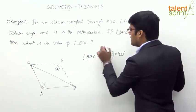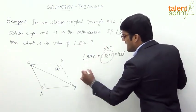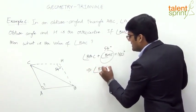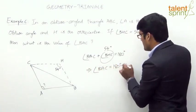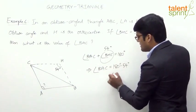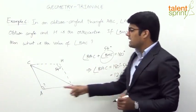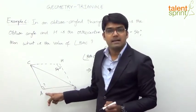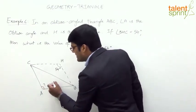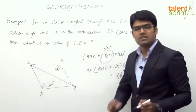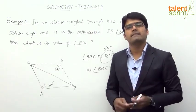Substituting BHC as 54 degrees, we get angle BAC equals 180 degrees minus 54 degrees, which is 126 degrees. So angle BAC, the obtuse angle, is 126 degrees.